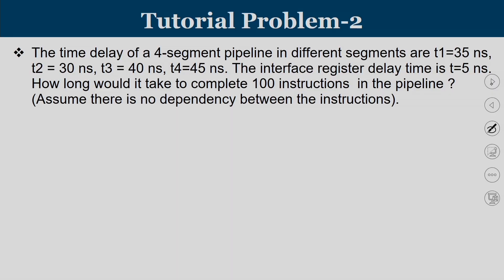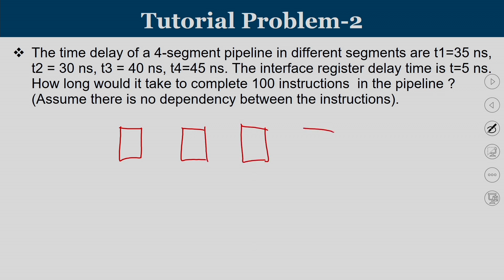Problem 2 is a pipeline-associated problem. A four-segment pipeline has segment delays T1 = 35 ns, T2 = 30 ns, T3 = 40 ns, and T4 = 45 ns. The interface register delay time is T = 5 ns. The pipeline cycle time is governed by the maximum segment delay plus the interface time: 45 + 5 = 50 ns per clock cycle.